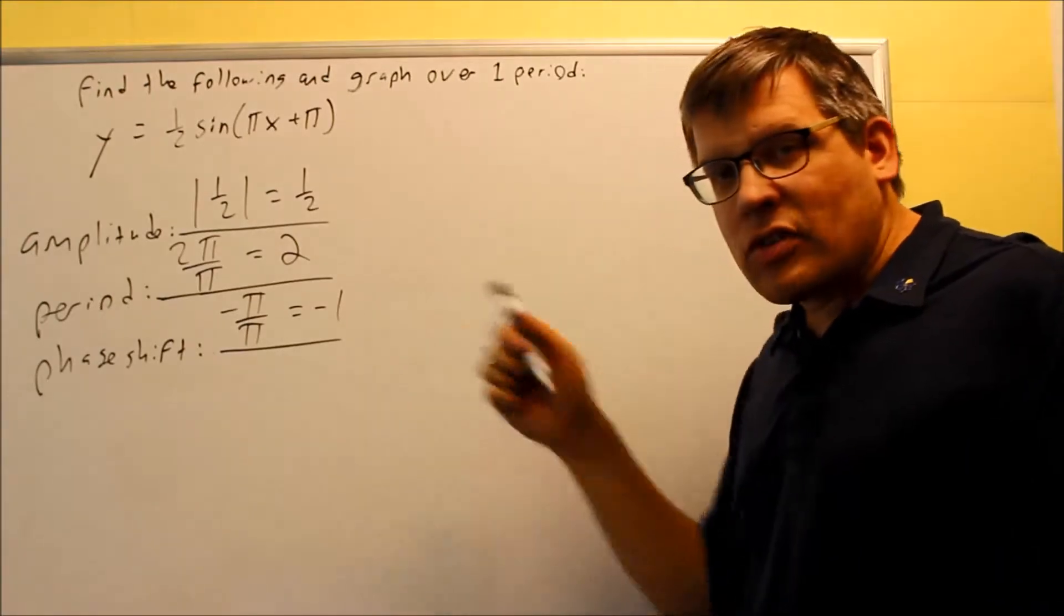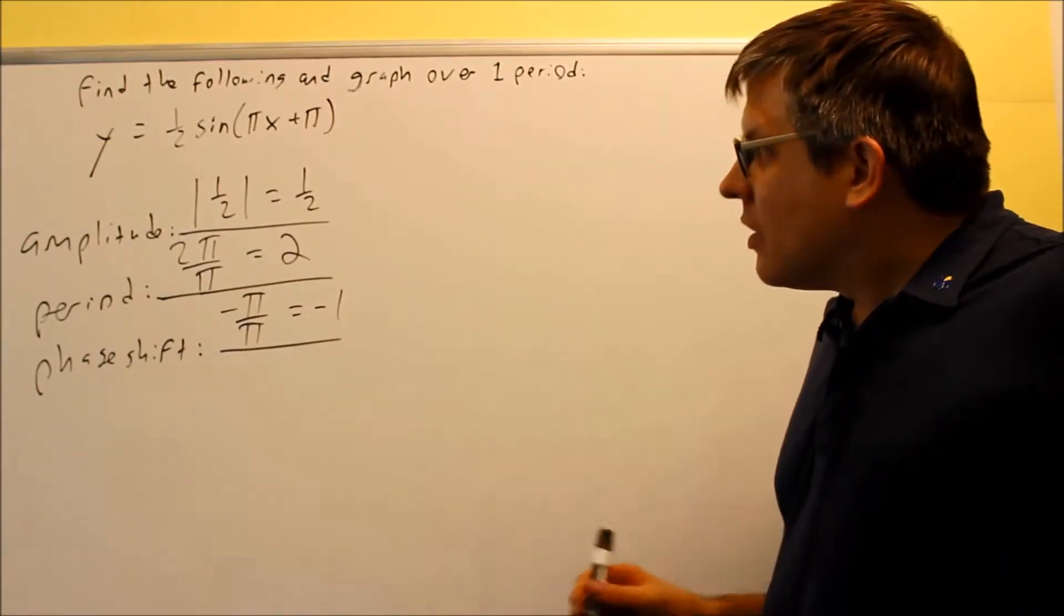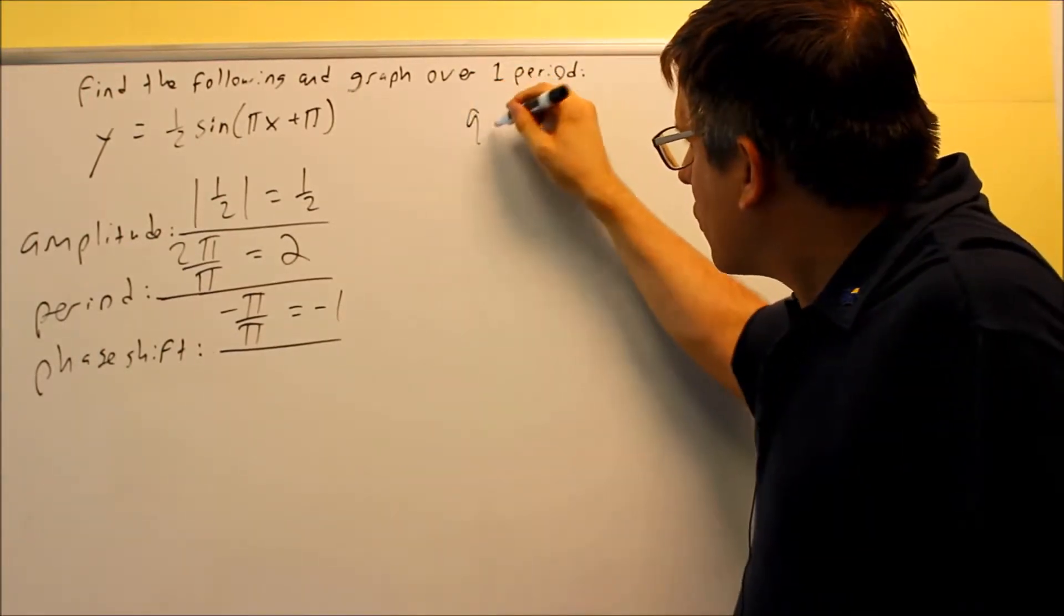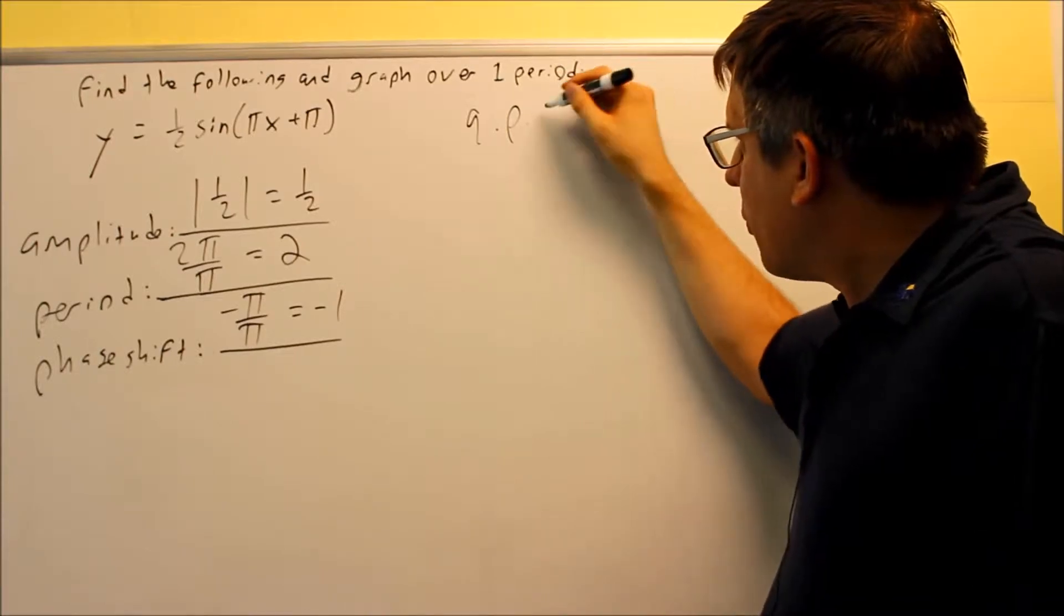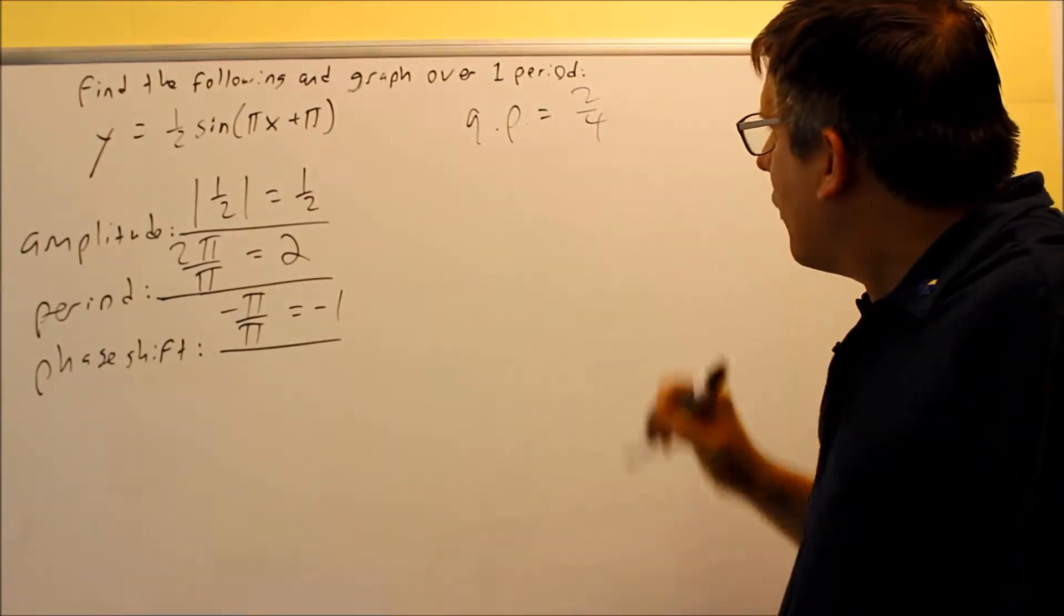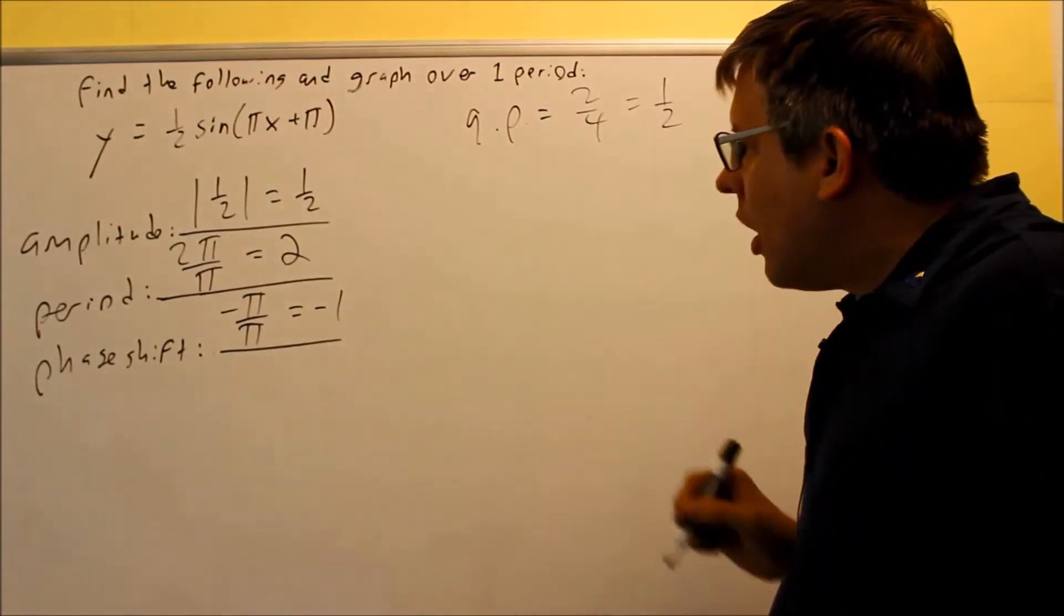This tells me that the graph itself is going to start at negative 1. In order to find out the other places on the graph, the other key points, I've got to find my quarter point first, that way I know what to add to each one. A quarter point is going to be your period divided by 4. So I have 2 over 4, that's going to be 1/2.